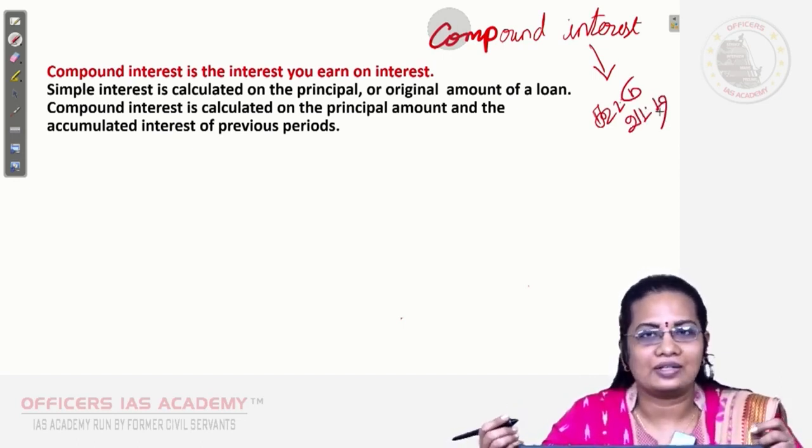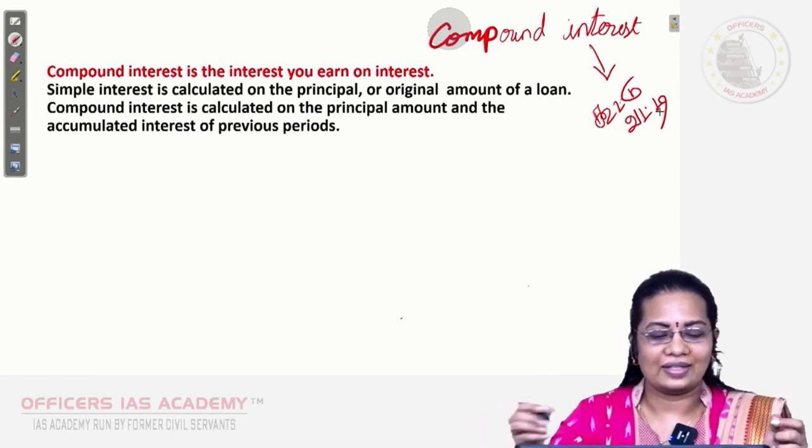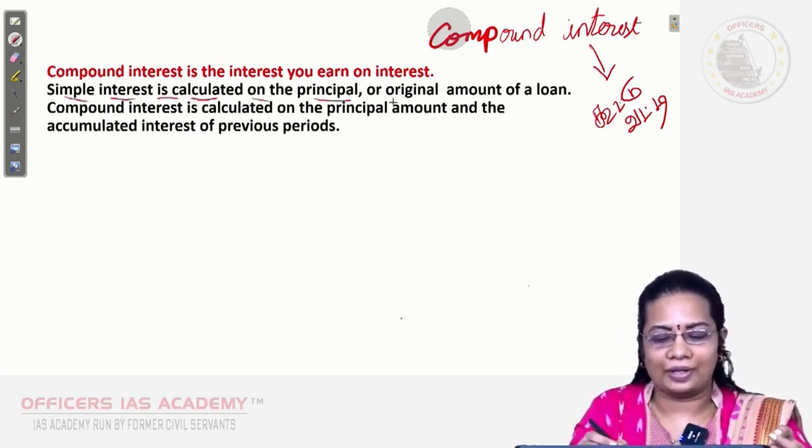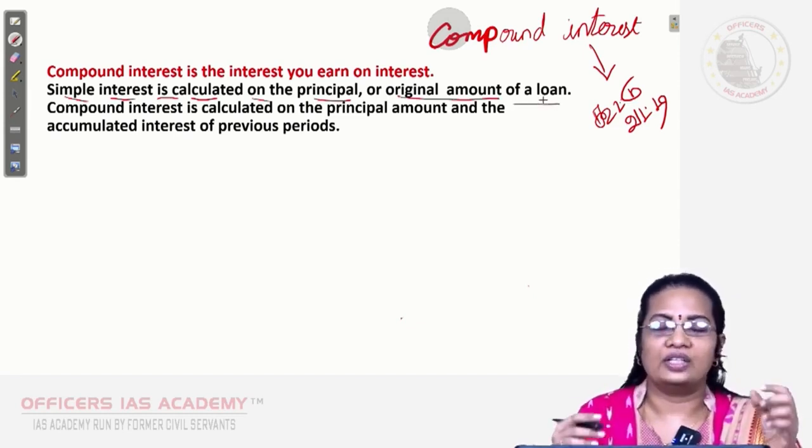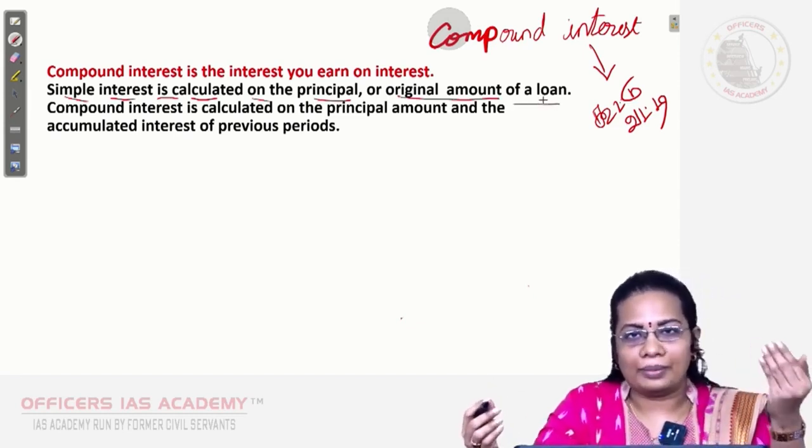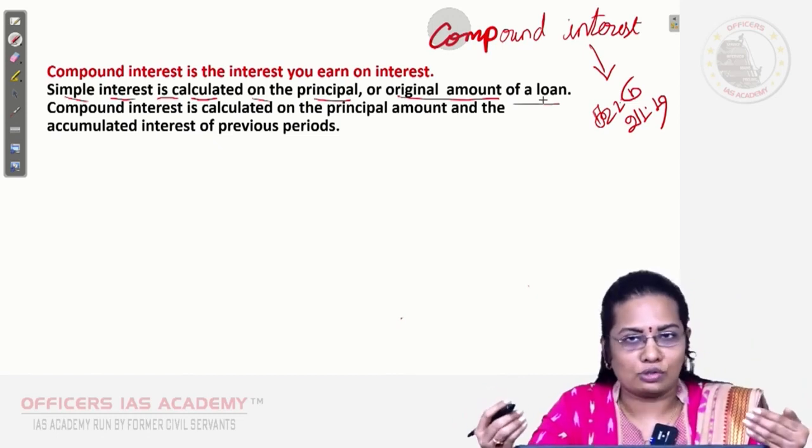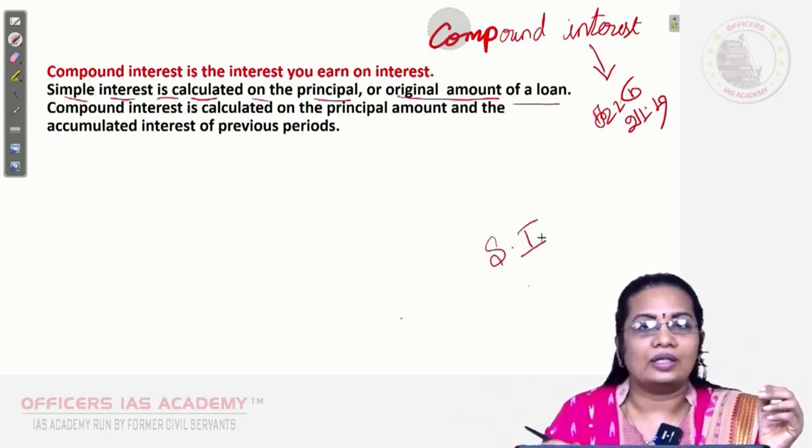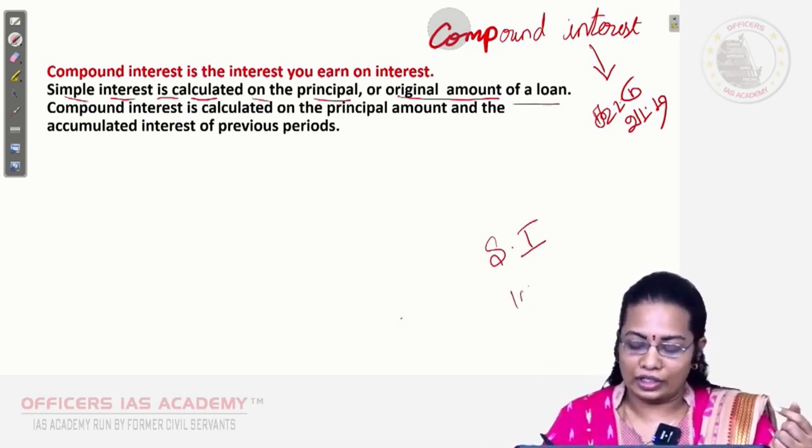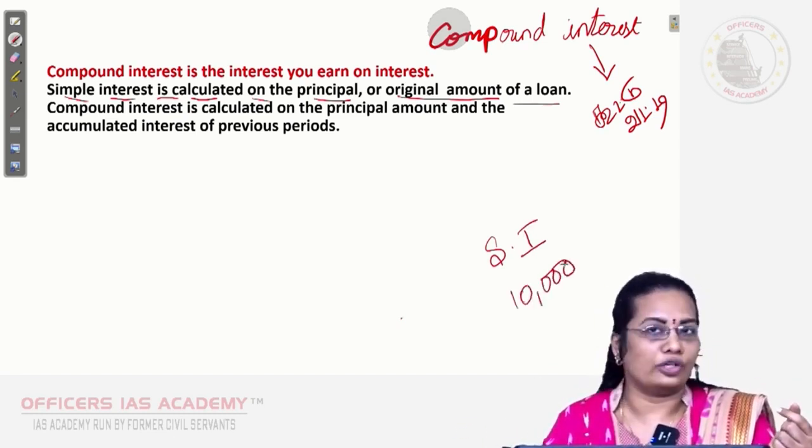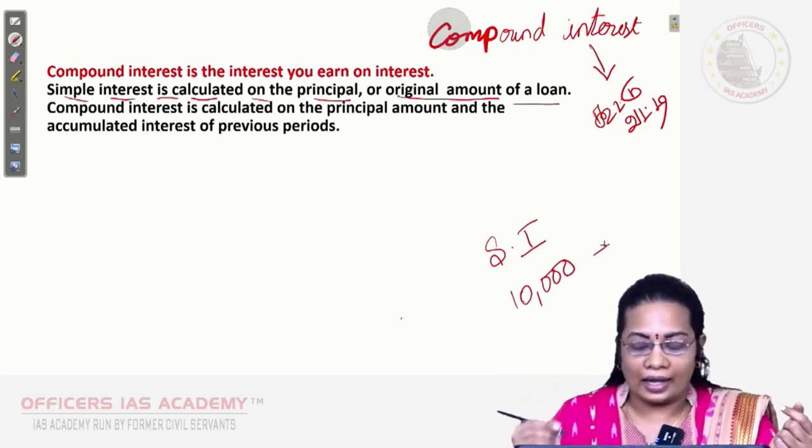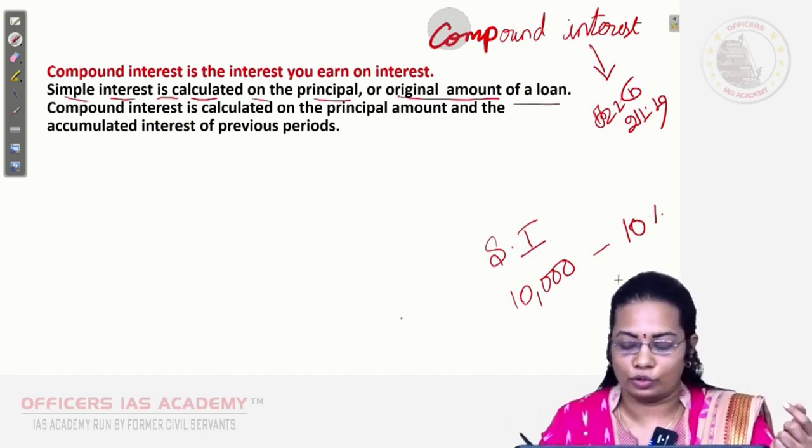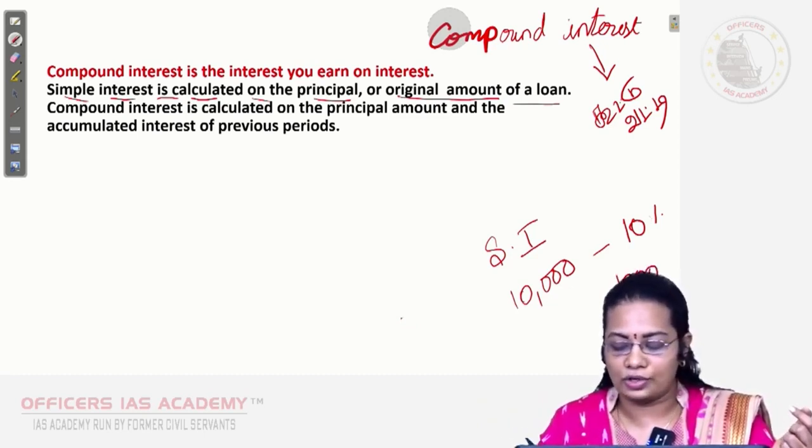The difference between simple interest and compound interest is simple interest is calculated on the principal or original amount of the loan. If you go to the bank for a loan of 10,000 rupees at 10% interest per annum, 10% of 10,000 equals 1,000 rupees.